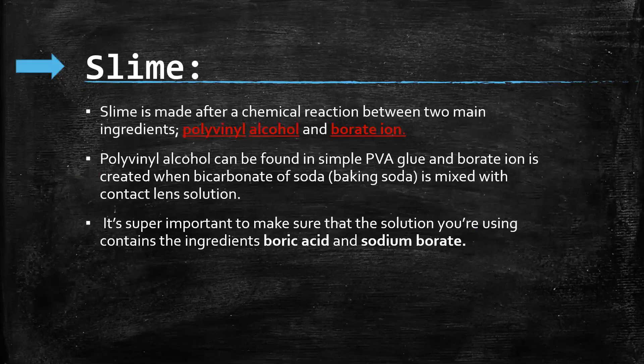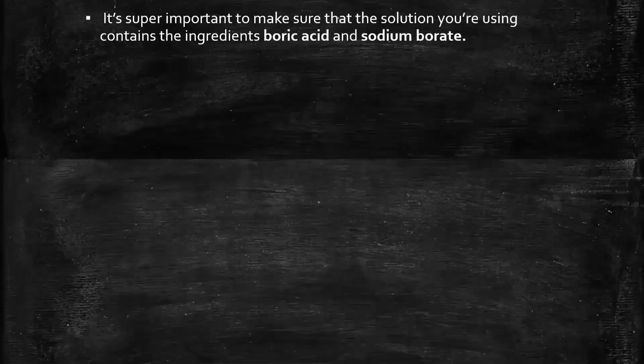The next topic is slime. Slime is made after a chemical reaction between two main ingredients: polyvinyl alcohol and borate. Polyvinyl alcohol can be found in simple PVA glue, and borate is created when bicarbonate — baking soda — is mixed with contact lens solution. It is important that the ingredients include boric acid and sodium bicarbonate, which gives the slime its properties.